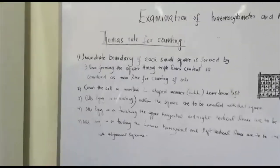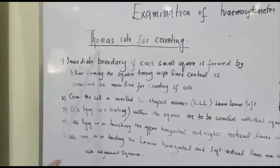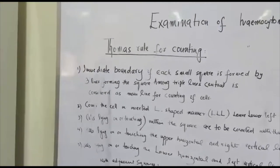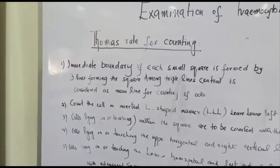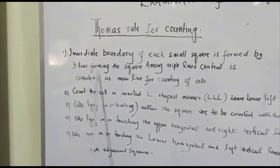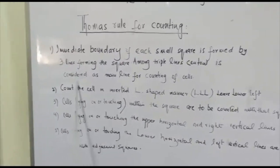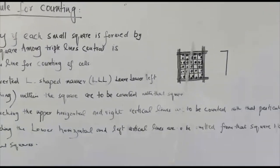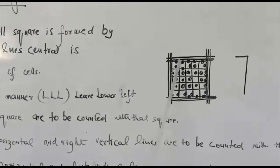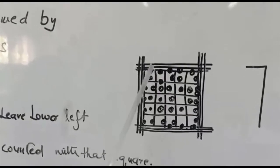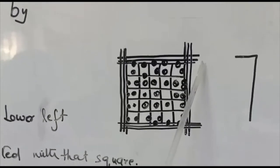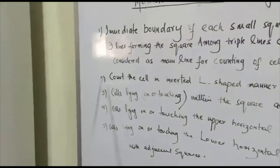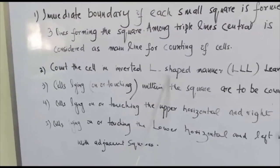Now I want to tell you one important thing: the foremost rule for counting of red blood cells, Thomas rule. There are five points. First, immediate boundary of each small square is formed by three lines. Among triple lines, the central is considered the main line for counting of cells. This is one small square of the central big square bounded by three lines, and the central line is the main line for counting.